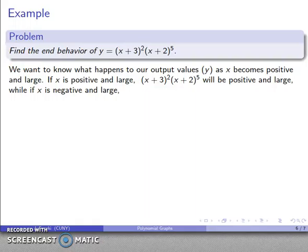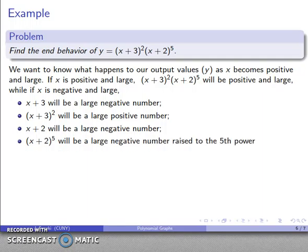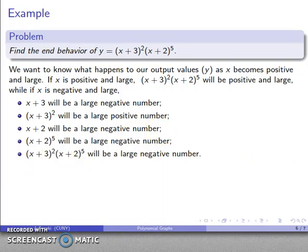As x gets large and negative: (x+3) is a large negative number, but squaring it gives a large positive number. (x+2) is also a large negative number, and raising it to the fifth power — an odd power — gives a large negative number. So the product (x+3)²(x+2)⁵ is large positive times large negative, giving a large negative number. As x goes to −∞, y becomes large and negative.